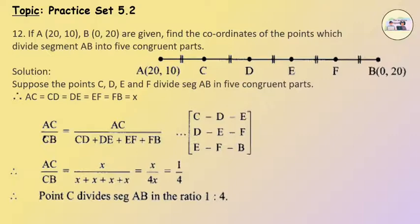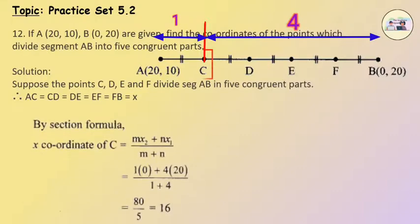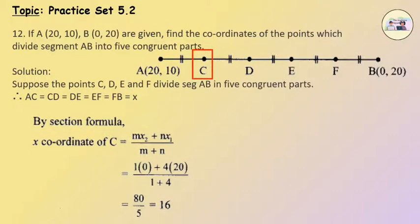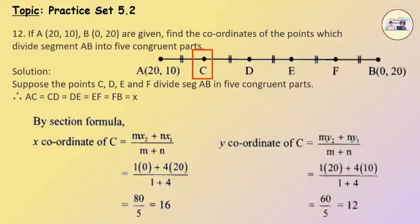Therefore, point C divides segment AB in the ratio 1:4. By the section formula, the x-coordinate of C equals mx2 plus nx1 upon m plus n, which equals 1 into 0 plus 4 into 20 upon 1 plus 4, which equals 80 upon 5, which equals 16. The y-coordinate of C equals my2 plus ny1 upon m plus n, which equals 1 into 20 plus 4 into 10 upon 1 plus 4, which equals 60 upon 5, which equals 12. Therefore, the coordinates of C are (16, 12).